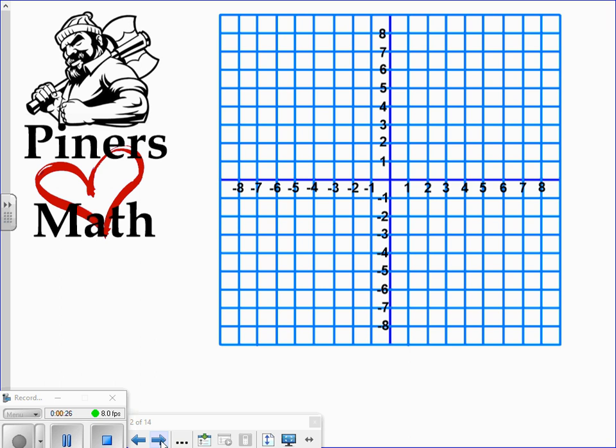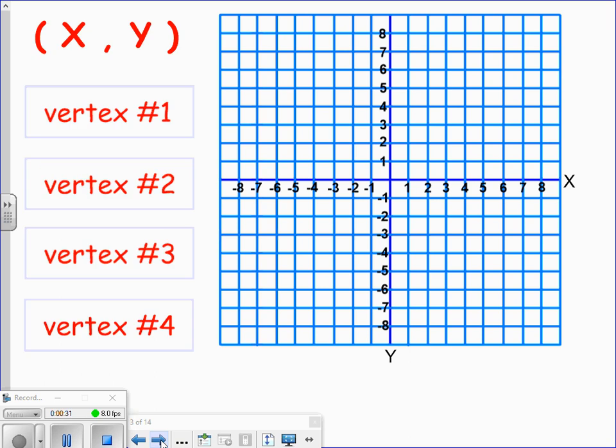Here's our coordinate plane. The guided instruction problem states that we have a polygon graphed on a coordinate plane and we have to use the ordered pairs that represent the vertices, the corners of the polygon, to graph the polygon. Then we're going to choose which shape is supposed to be graphed as a multiple choice question. Remember, an ordered pair represents the point on the x-axis and on the y-axis; the x comes first.